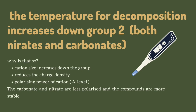Going down the second group, the temperature for decomposition increases for both nitrates and carbonates. This is because the cation size increases down the group, which in turn reduces the charge density and the polarizing power of the cation. The carbonates and nitrates are less polarized, and the compounds are now more stable.